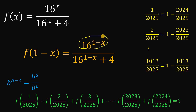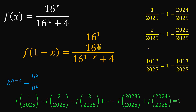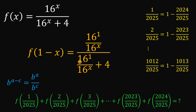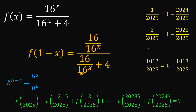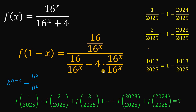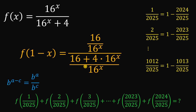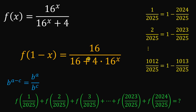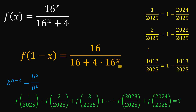So 16 raised to the power of 1 minus x gives us 16 raised to the power of 1 over 16 raised to the power of x. We do the same on the denominator. Note that 16 raised to the power of 1 is just 16. Now let's combine the terms in the denominator by multiplying 4 by 16 raised to the power of x over 16 raised to the power of x to get a common denominator. Adding those terms gives 16 plus 4 times 16 raised to the power of x, all over 16 raised to the power of x. Dividing eliminates 16 raised to the power of x, giving us 16 over 16 plus 4 times 16 raised to the power of x.